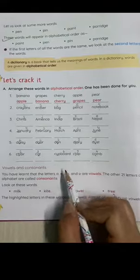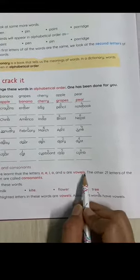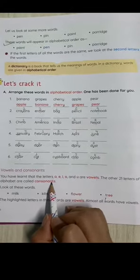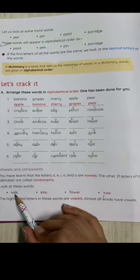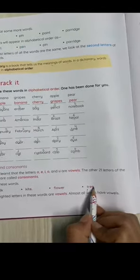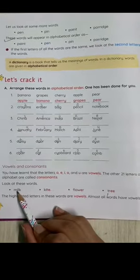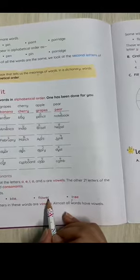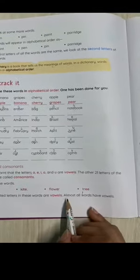Vowels and consonants: A, E, I, O, U are the vowels and the rest of the letters are called consonants. The highlighted letters are the vowels: I vowel, I-E vowel, O-E vowel, and double E vowel. Almost all words have vowels.